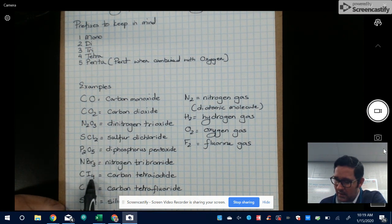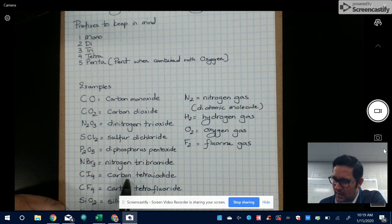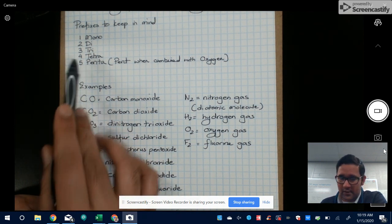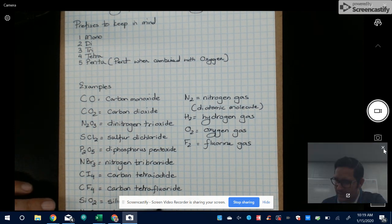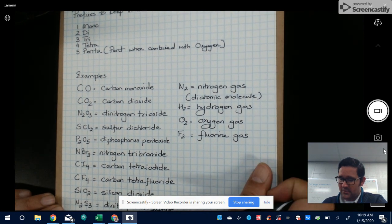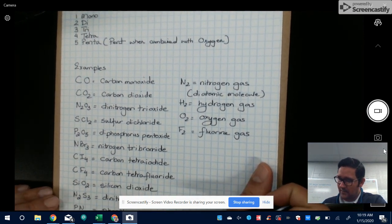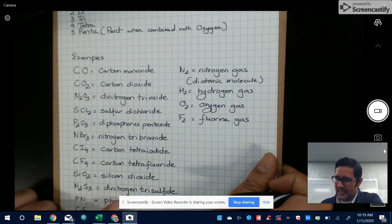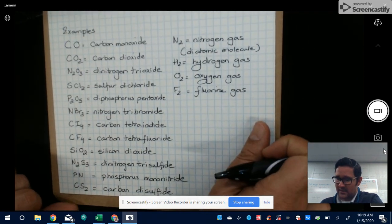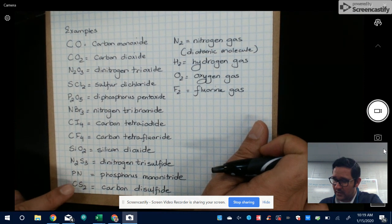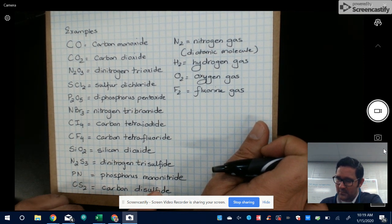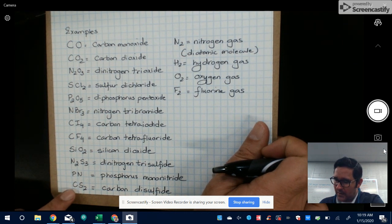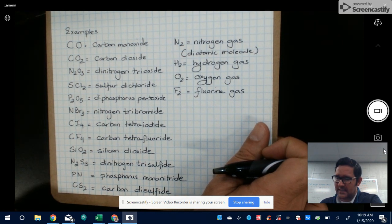This one has one carbon and four iodine. So carbon tetraiodide, because tetra is four. One silicon, two oxygen. So silicon dioxide. You have a couple others in here. You have two nitrogens and three sulfur. So you're going to call it dinitrogen trisulfide. Then you have another example where you have one phosphorus and one nitrogen. So it's phosphorus mononitride, one carbon and two sulfur. So carbon disulfide.